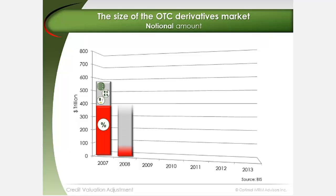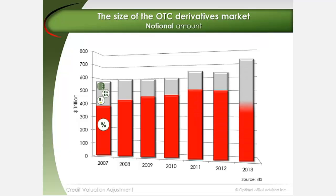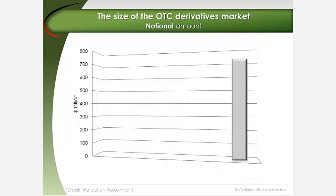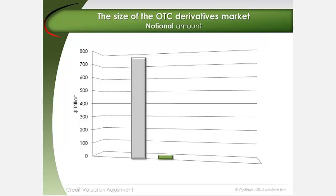By 2013, the size of the over-the-counter derivatives market had grown to $710 trillion. To put this in perspective, global GDP in 2013 was $73 trillion, or 10% of the notional amount of OTC derivatives outstanding.